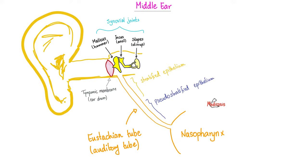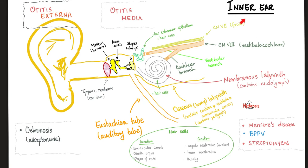There is a connection between your middle ear and your nasopharynx, which is the part of your pharynx behind your nose. The pharynx has three parts: behind your nose is the nasopharynx, behind your mouth is the oropharynx, and behind the larynx is the laryngopharynx. The connection between the middle ear and the nasopharynx is via the Eustachian tube, also called the auditory tube, pharyngotympanic tube, or tympanopharyngeal tube. The inner ear handles balance — via three semicircular canals, utricle and saccule — and hearing via the cochlea, which includes the organ of Corti.